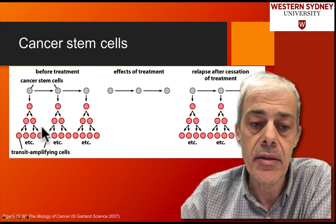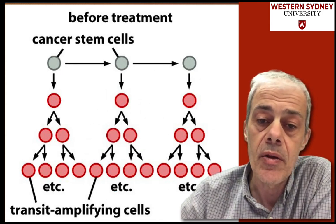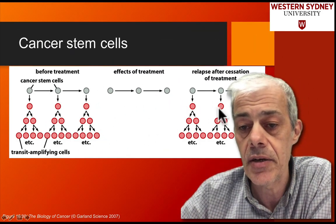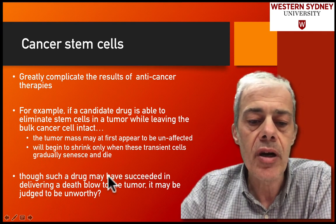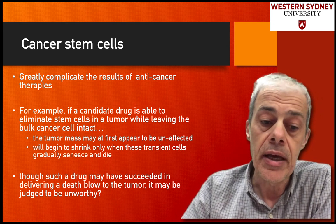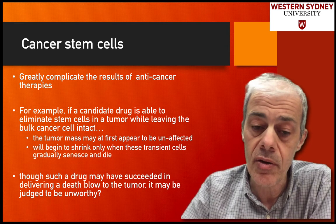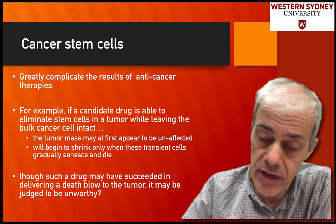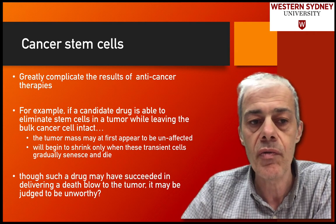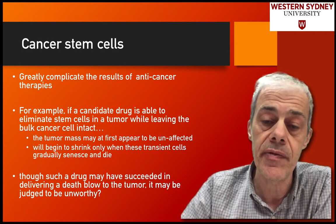But if you only target the transiently amplified cells and not the stem cells, then even though it looks successful, after a period of time these stem cells will give rise to another population. Even though the drug seemed unsuccessful because it only killed off a small population — the cancer stem cells — it may be considered unworthy, but in actual fact it's been very successful because once those transiently amplified cells are naturally broken down, they're not replaced. So the cancer stem cells can confound the results of treatment, and you need to take them into consideration when analyzing the effectiveness of the drug.